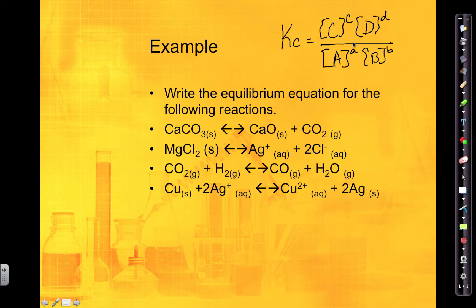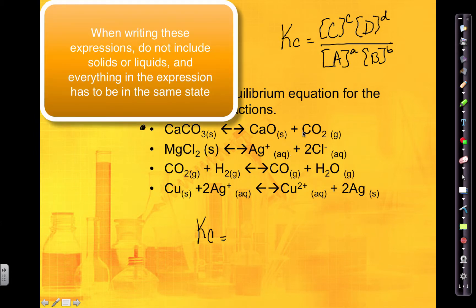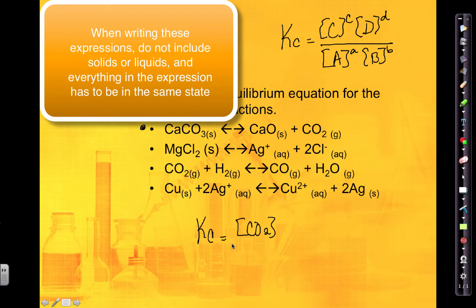Let's write the Kc expression for some reactions. For the first one: Kc equals products divided by reactants. There's a solid here, so I'm not going to include it. CO2 is a gas, so I can include that — concentration of CO2 to the first power. Dividing by the reactants, but again I have a solid here, so Kc is actually just equal to the concentration of CO2.